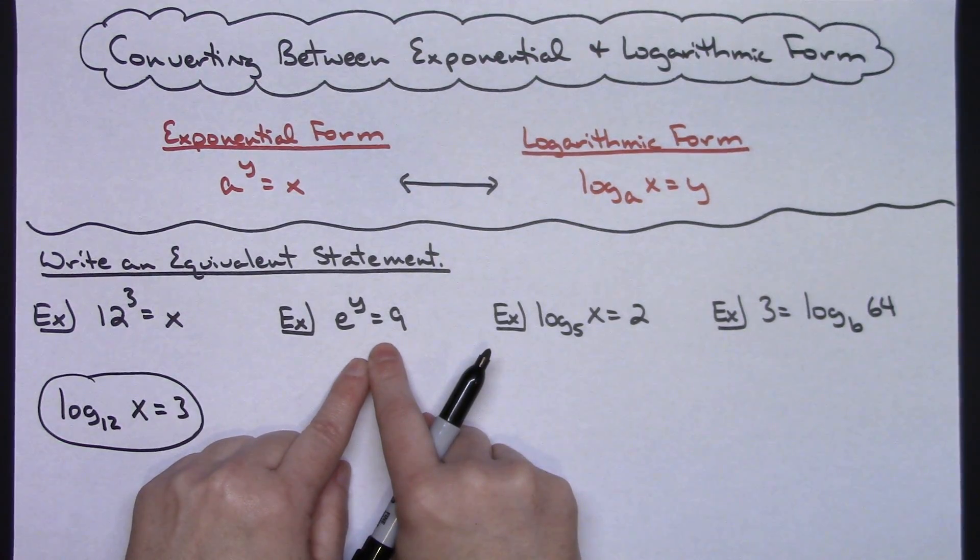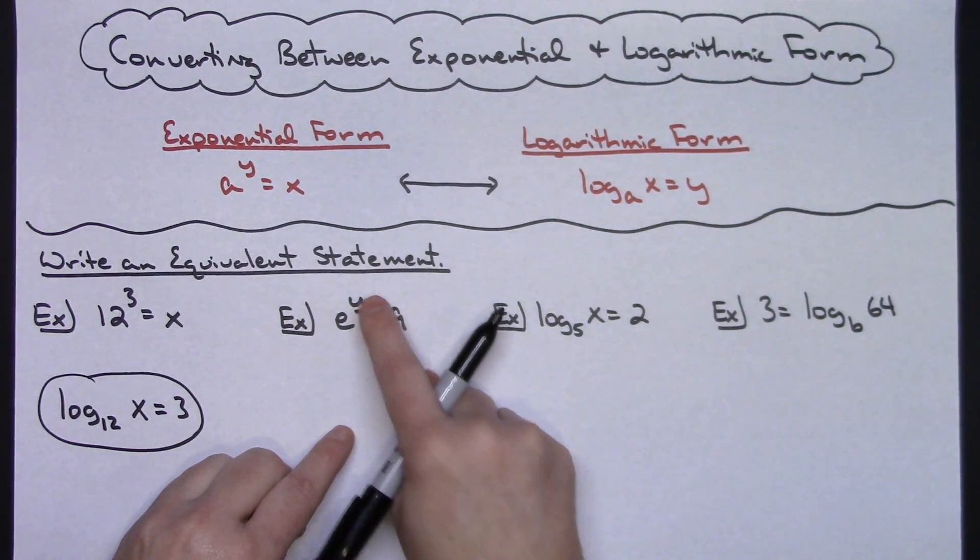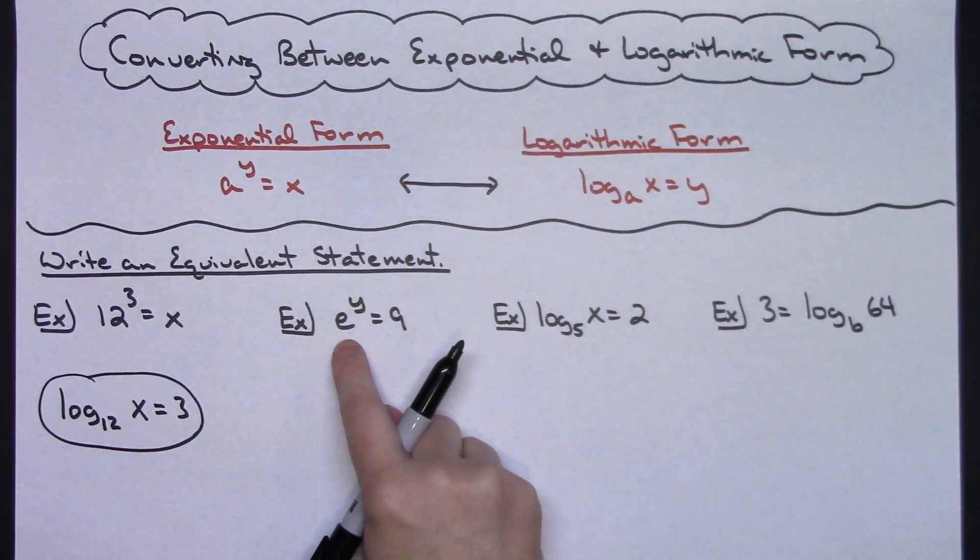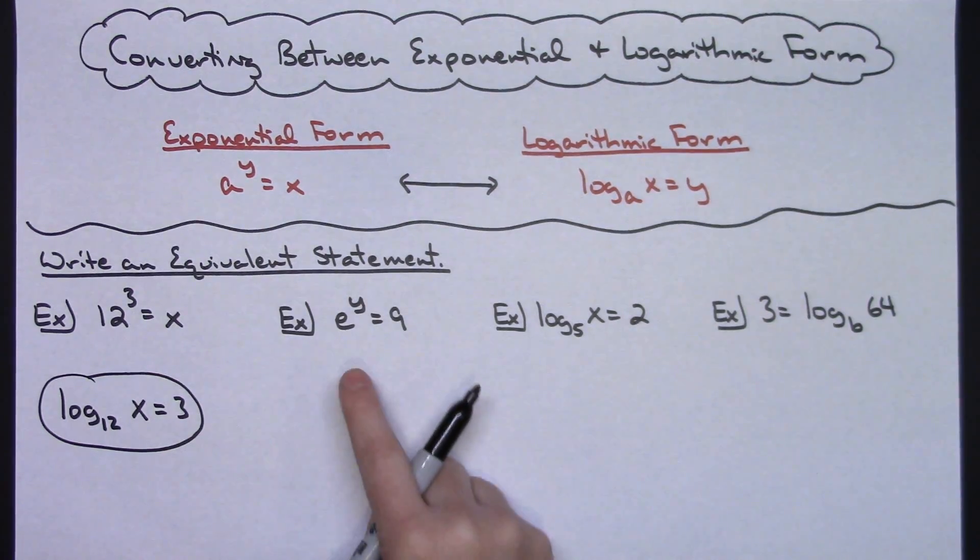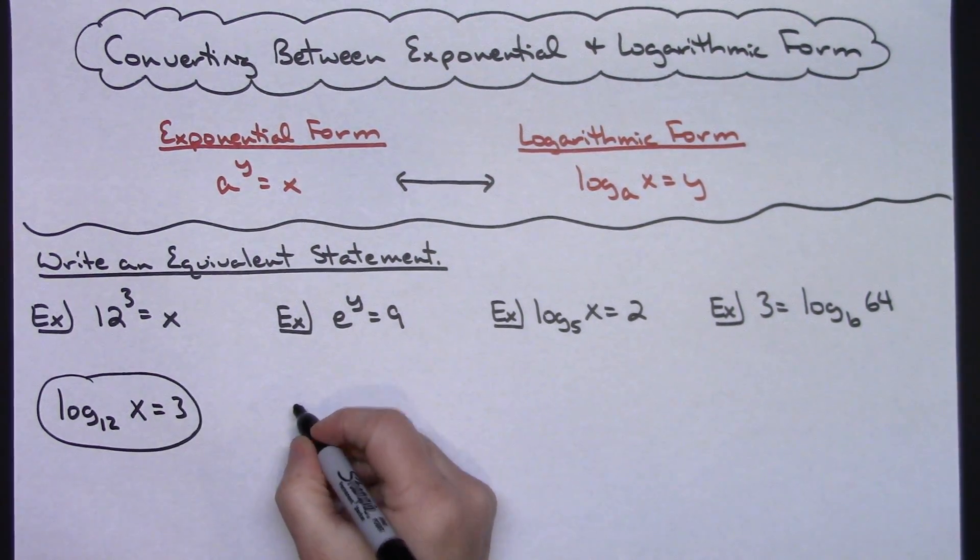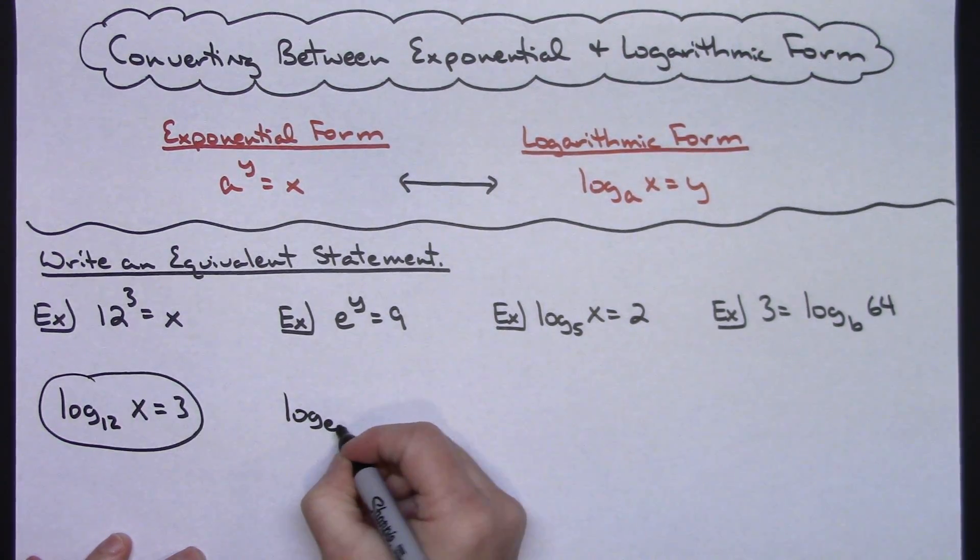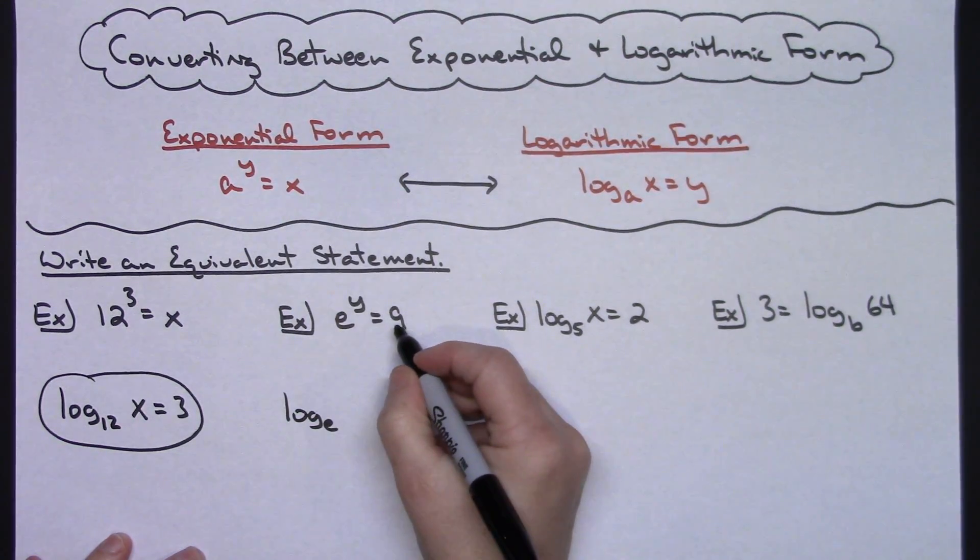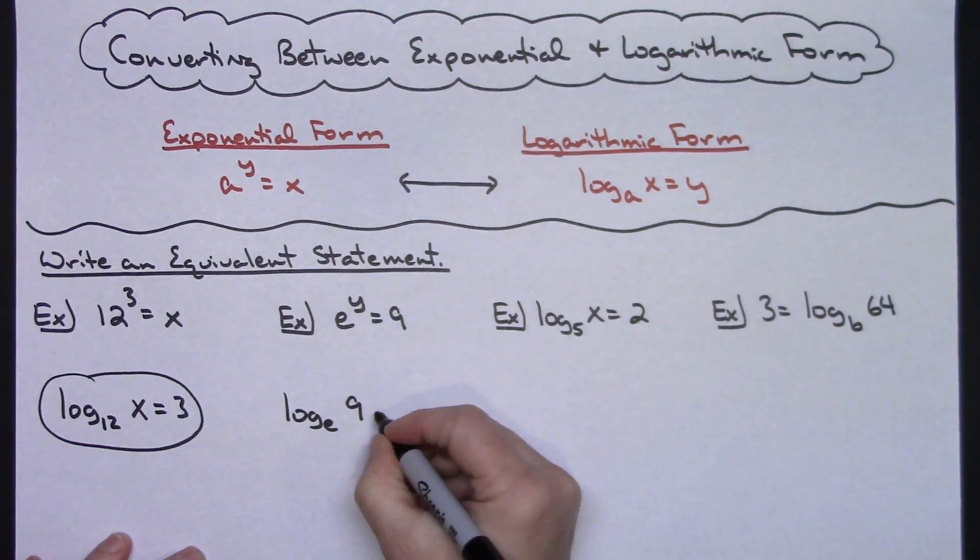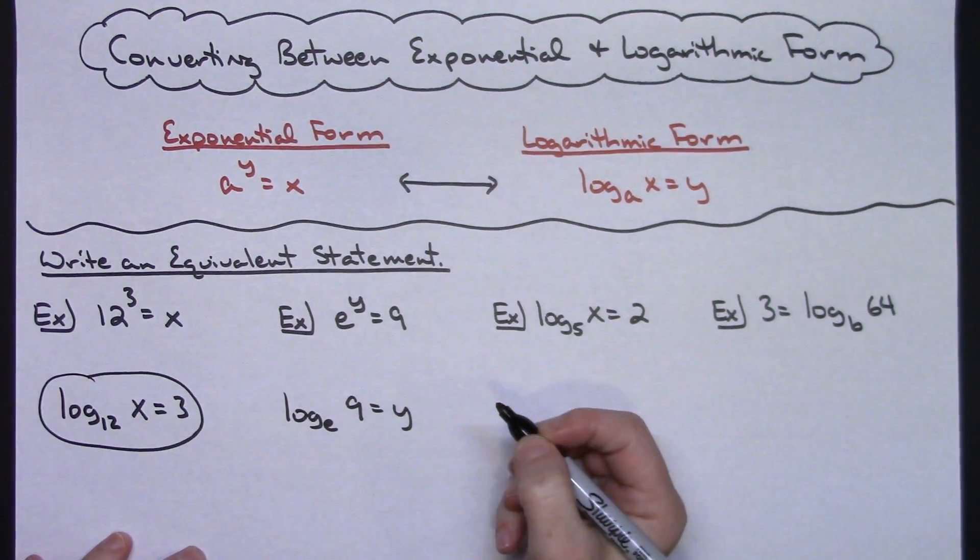Taking a look at this second example, we've got e raised to the y equals 9. So my base is e. So if I continue to use the same form, then I might want to write down the log base e. And then what it's equal to is what I'm taking the log of and then equals to y.